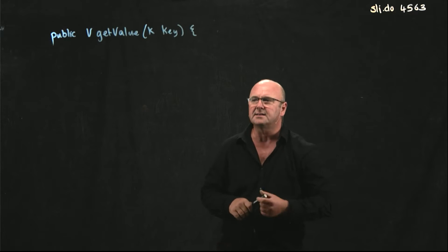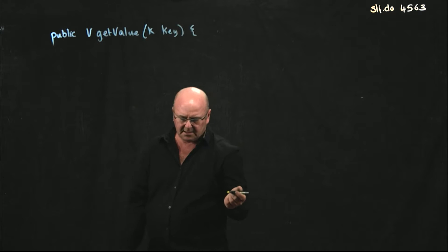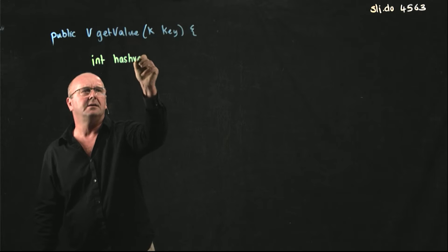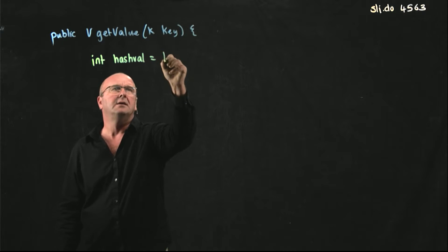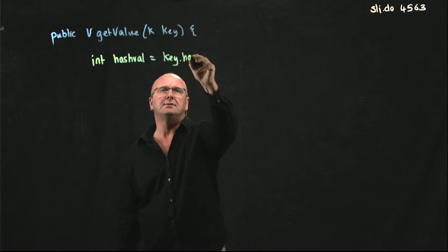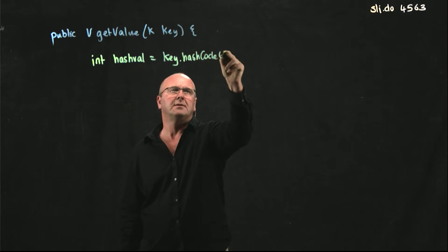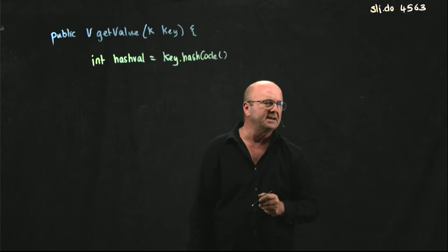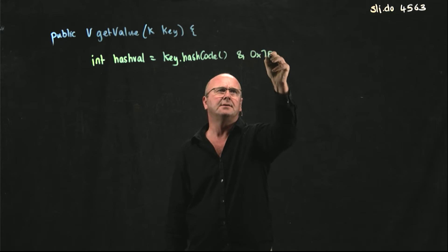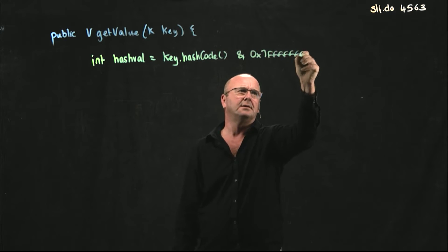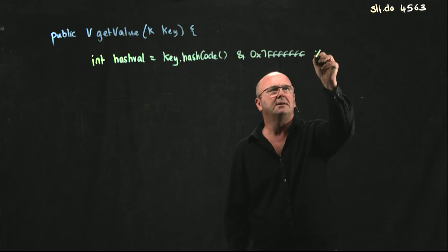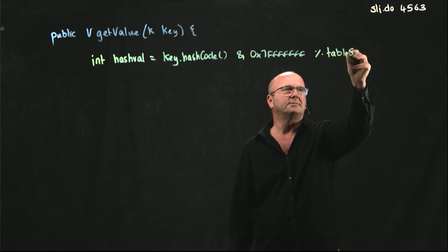So given a key, how do we get the value back? The way that we do it, we take the key, we get its hash code. What do we do next? Make it positive. What do we do next? We mod it on the table size.